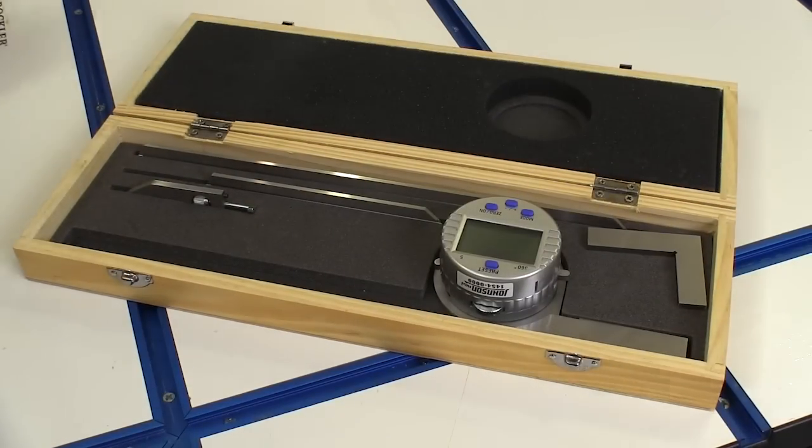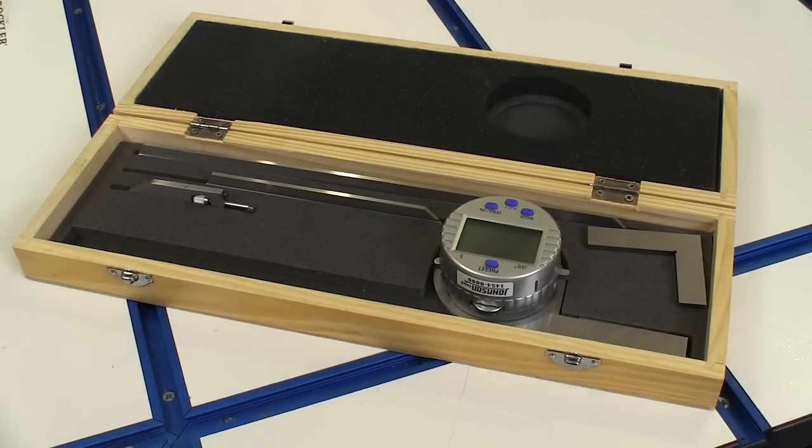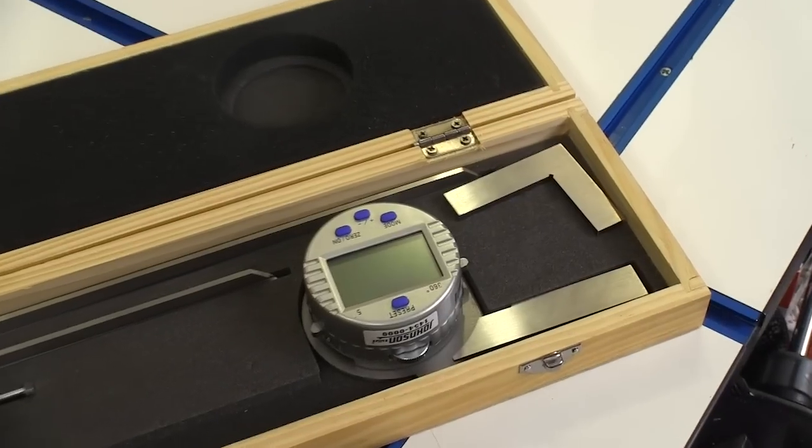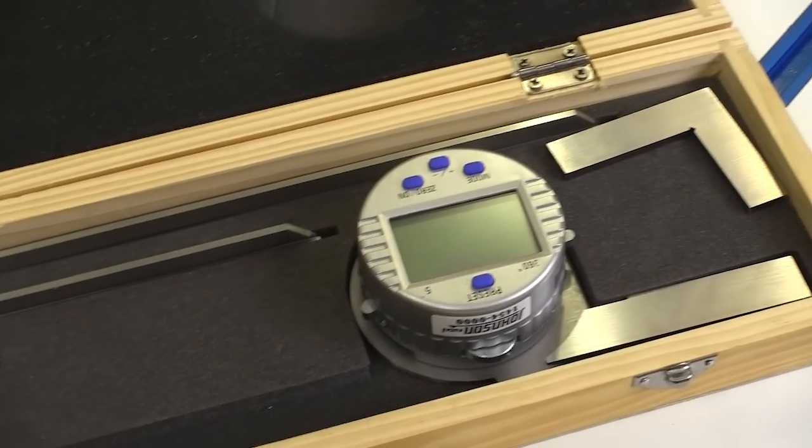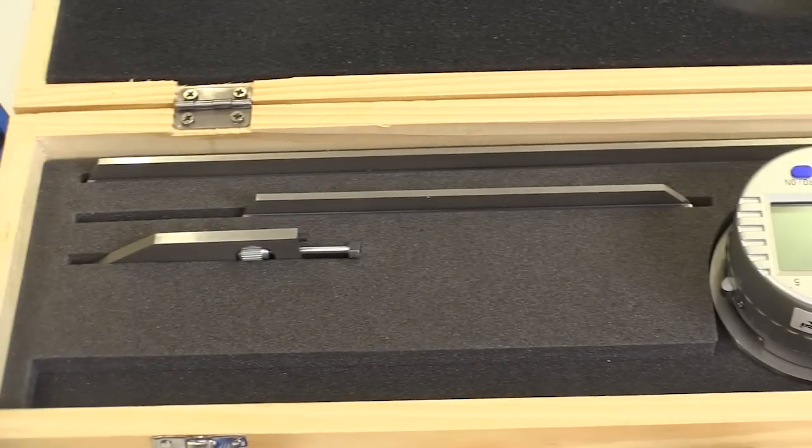Johnson's digital protractor comes in this nice wooden case because it deserves protection. All the components are very well made, most of them are stainless steel and finely machined. The included pieces make this a very versatile tool.